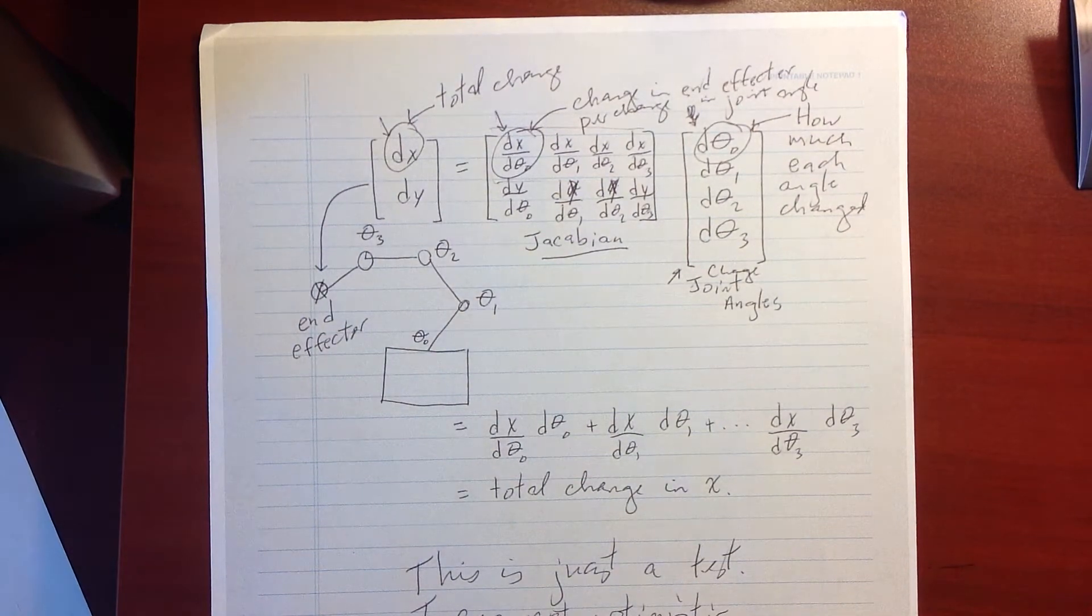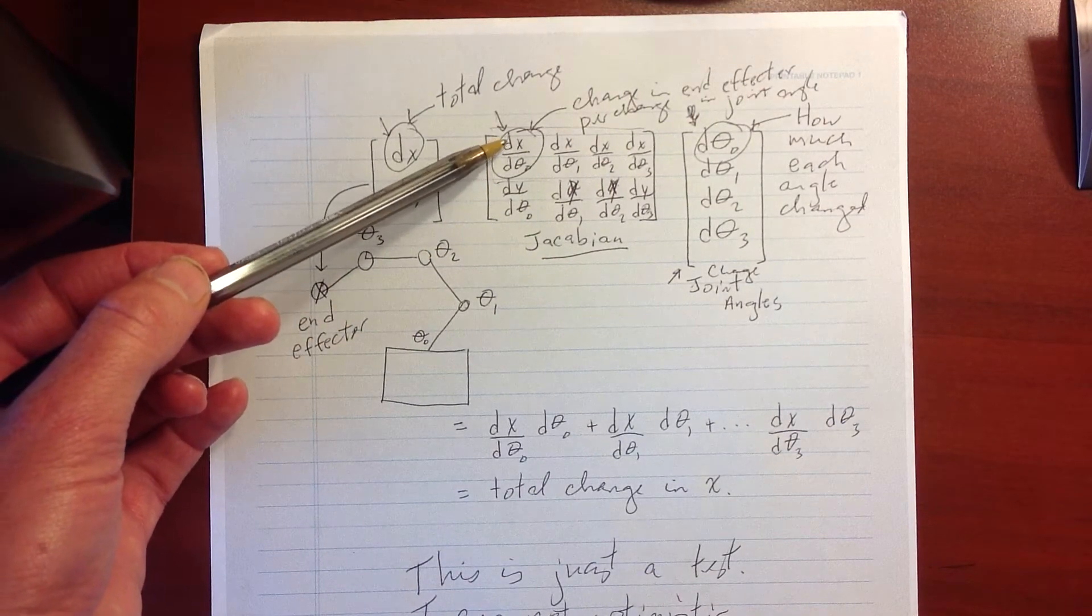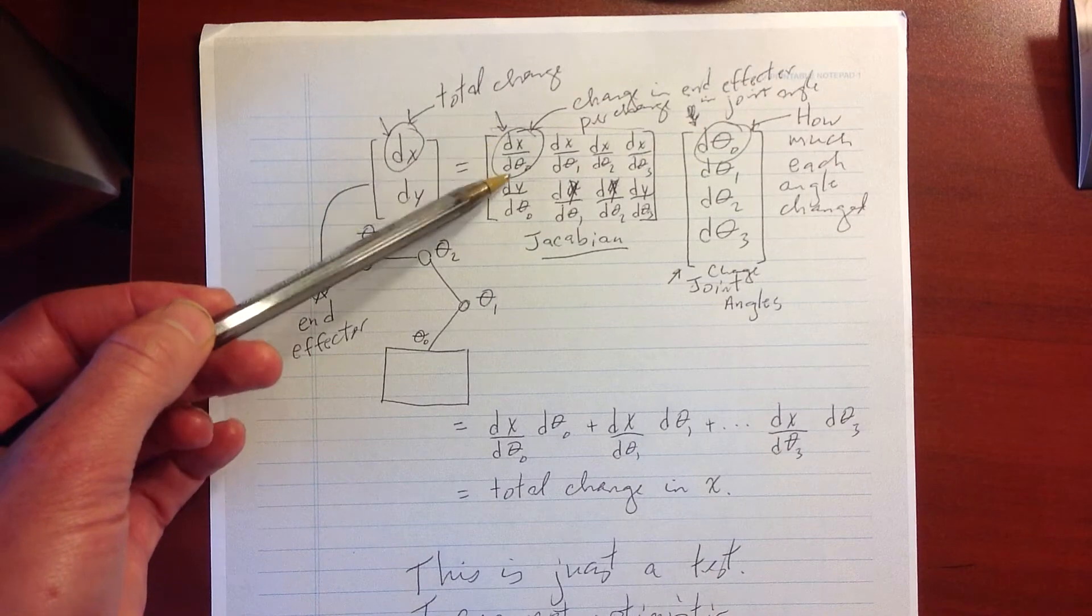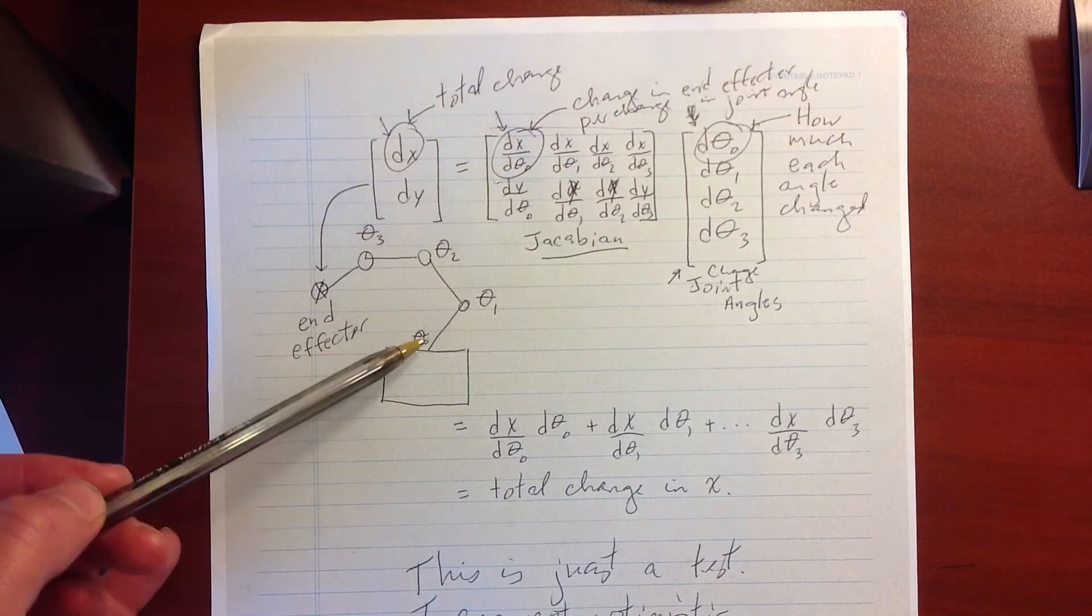All right, so in this video we're going to talk about the inverse kinematics solver. Specifically, how to find the change in x of the end effector position given a change in a joint rotation angle, theta 0.